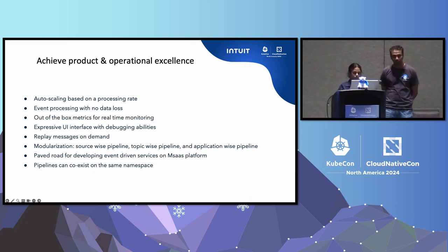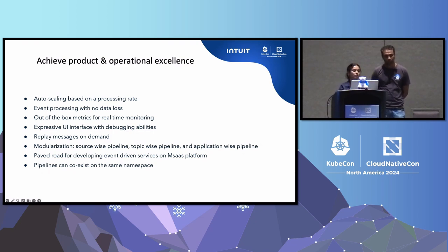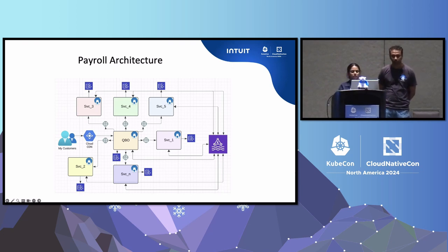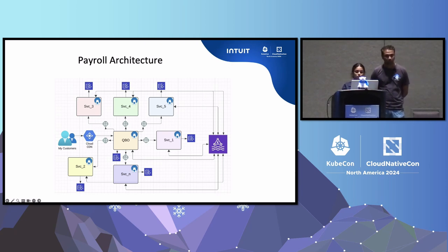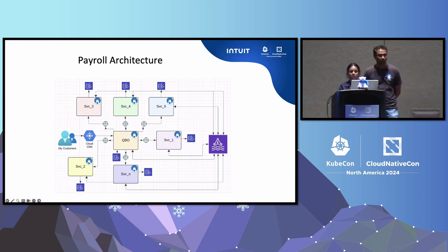The system consuming should take care of idempotency. Numaflow has the ability to modularize pipelines based on source, topic, or application, and pipelines can co-exist on the same namespace deployed alongside the application. Here is our payroll architecture after integrating with the Numaflow SDK. Our payroll application is backed by N number of plugins and services, with 30% of traffic being asynchronous. We had a monolithic application which we decomposed into N services, and as services grew, the need for segregating traffic became a must — so we can detect issues, triage, and recover faster.